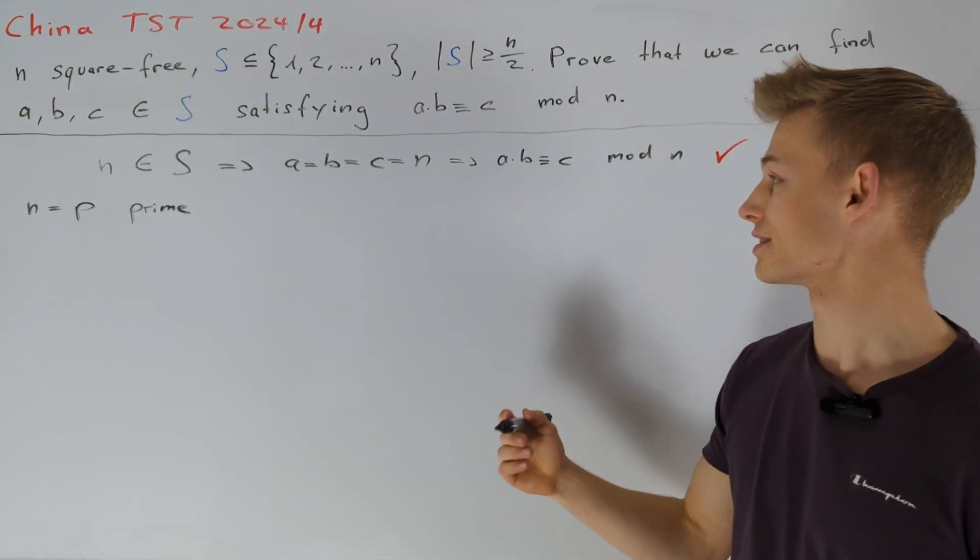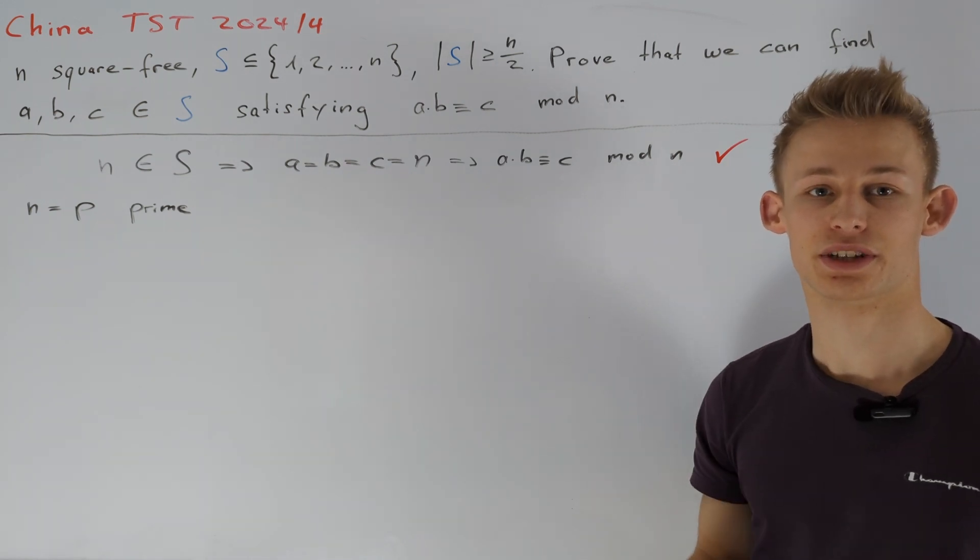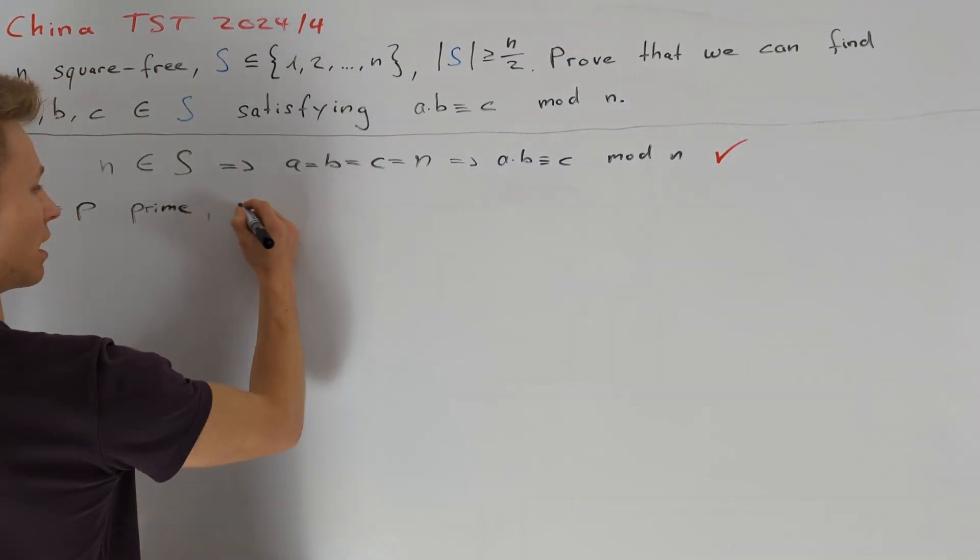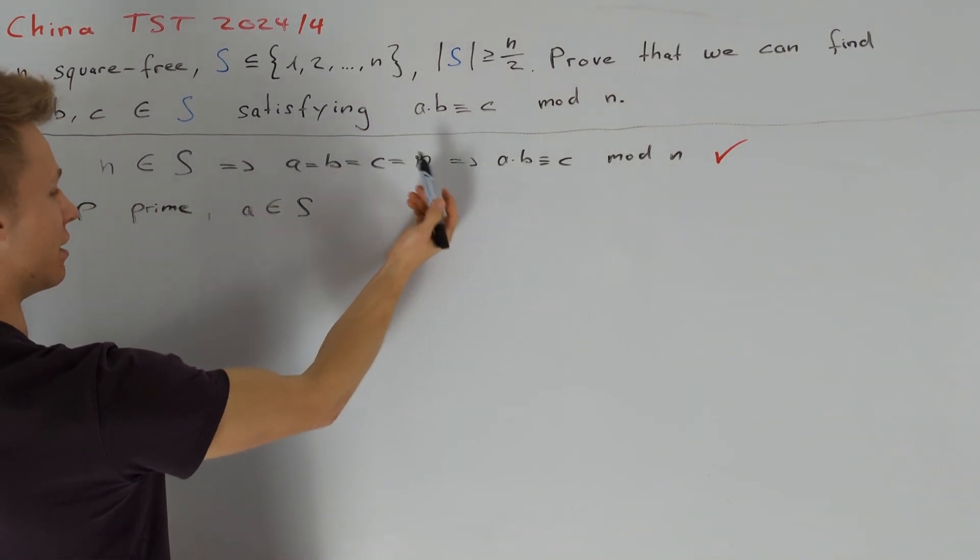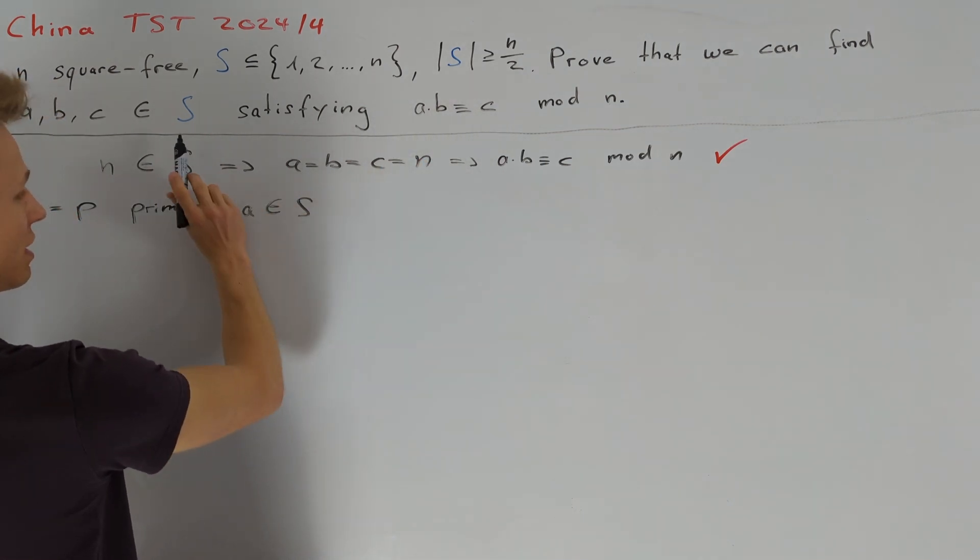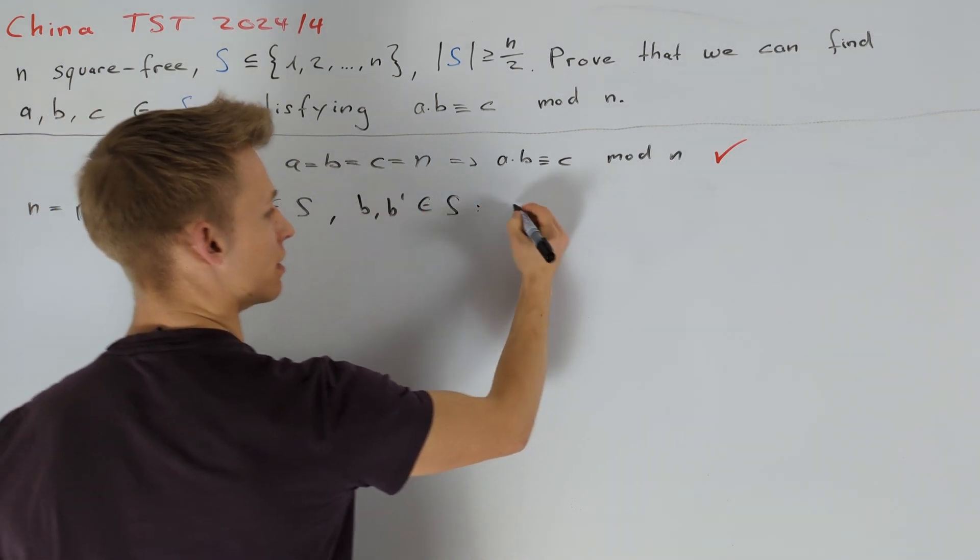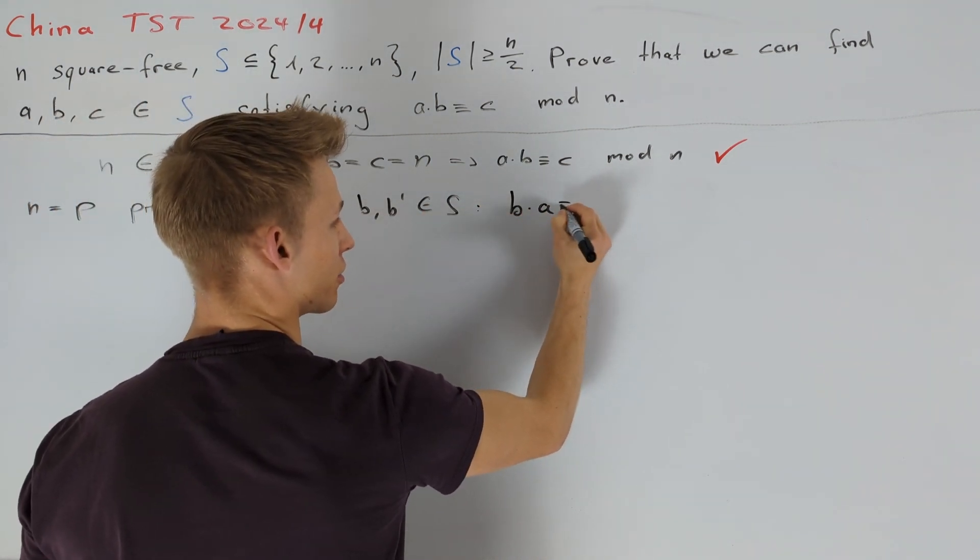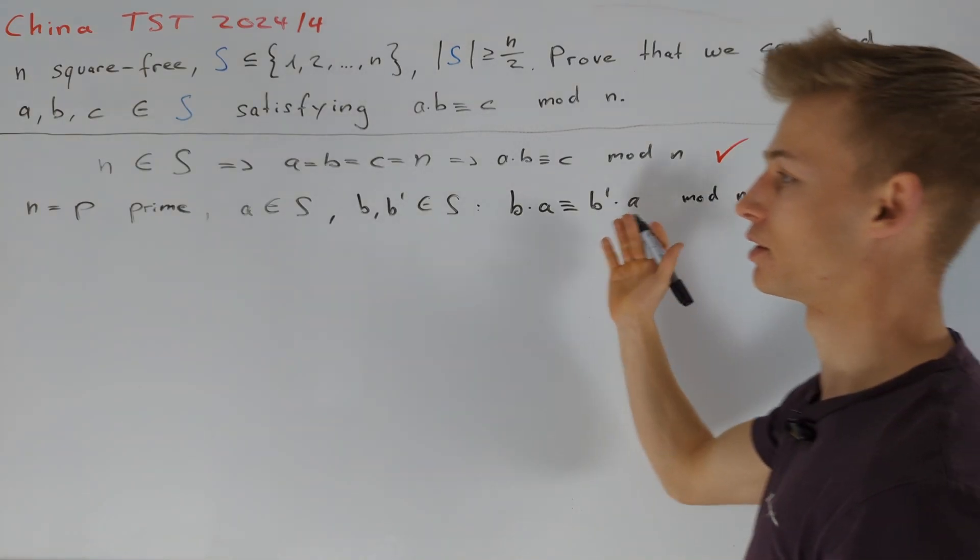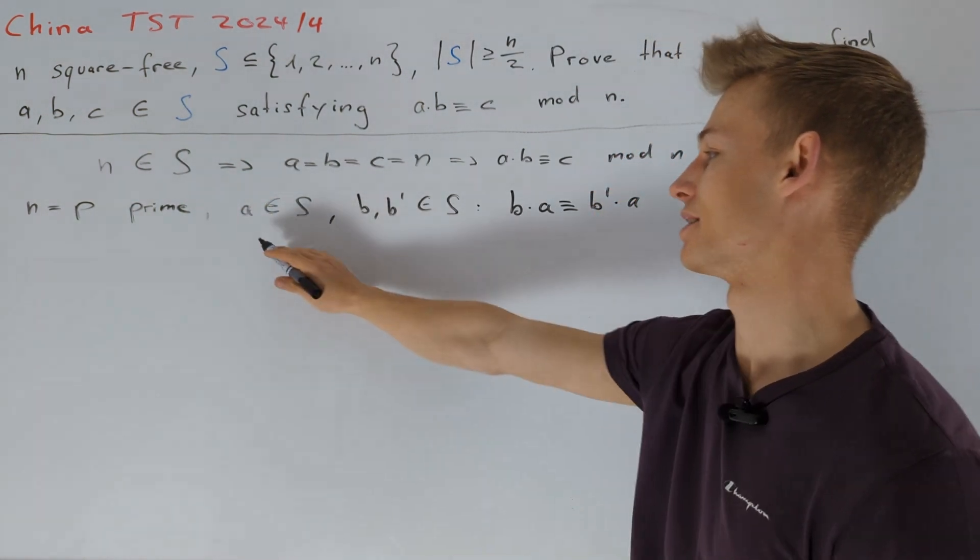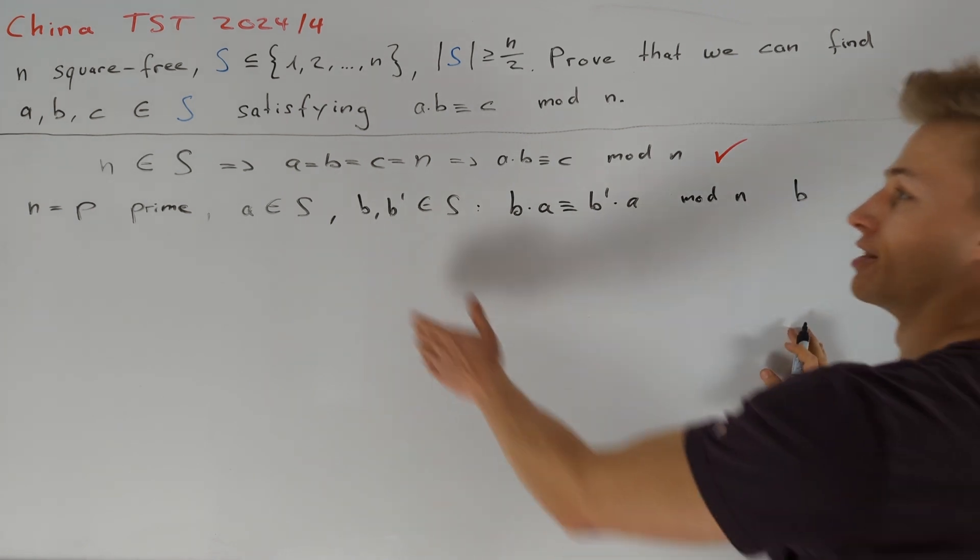A reason why this is a good first step is that congruences modulo a prime number are easy to handle because we can do division. In this case, let's start by taking an element a out of S and consider the product a times b where this a is fixed and b is an arbitrary value out of S. Taking b and b prime from our set S such that b times a is congruent to b prime times a modulo n, we can divide by a because we know that n is not an element of S, so a is not equal to n. To get that b is congruent to b prime and since they are in a set 1 to n, we know that b equals b prime.